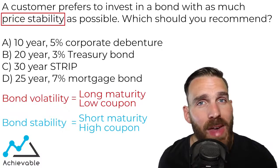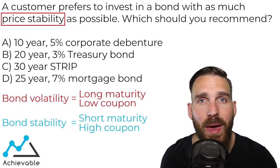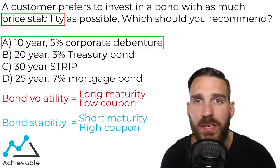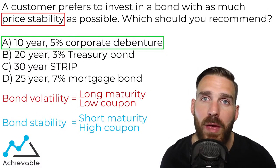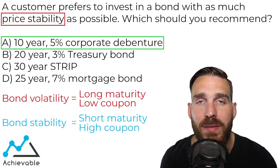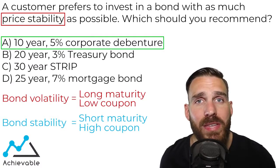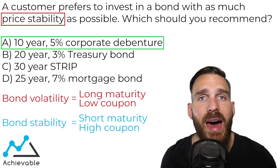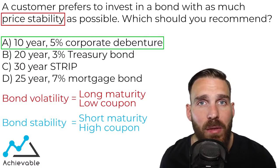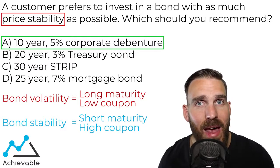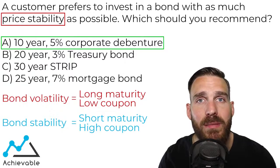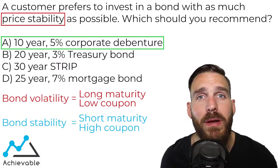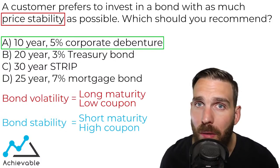With that information, if you went with A, that is the right answer. By far, that is the shortest-term maturity, so it will exhibit the most price stability. Now, if there had been another 10-year bond, you would look for the one with the higher coupon, given that we're looking for short maturities and high coupons for price stability. But you didn't need to worry about that — this one was pretty plain and simple.